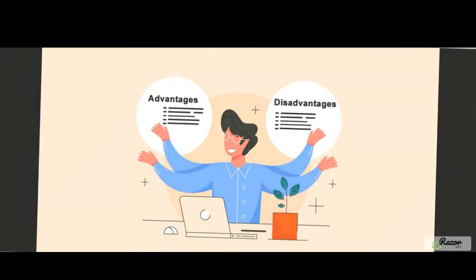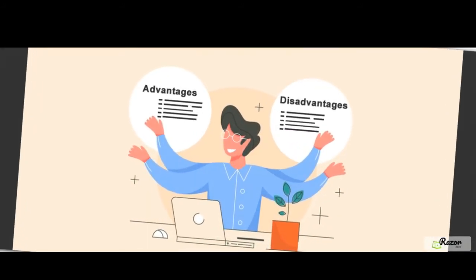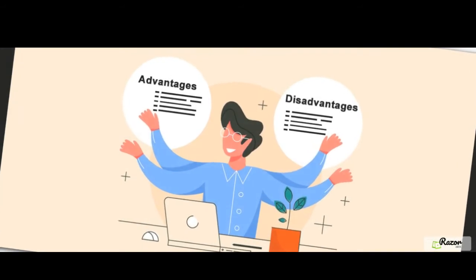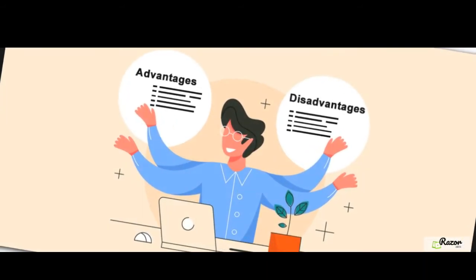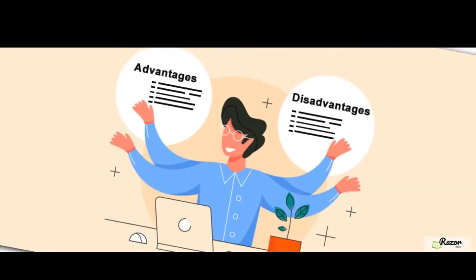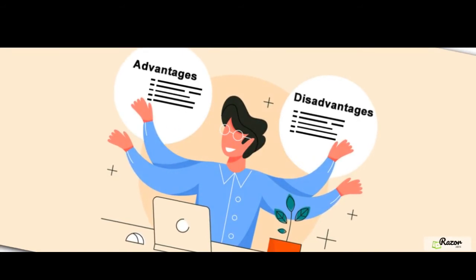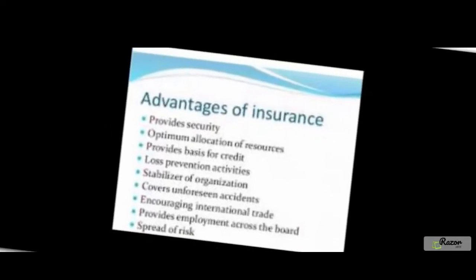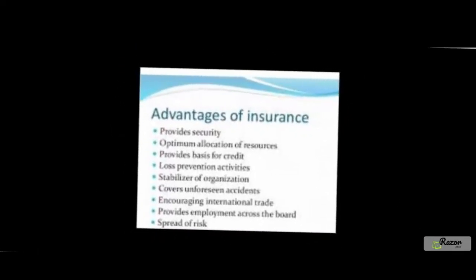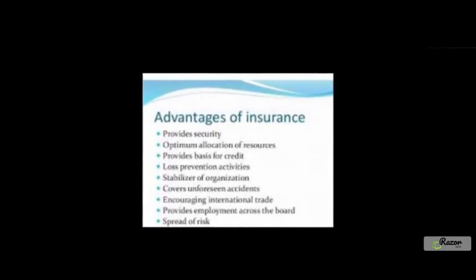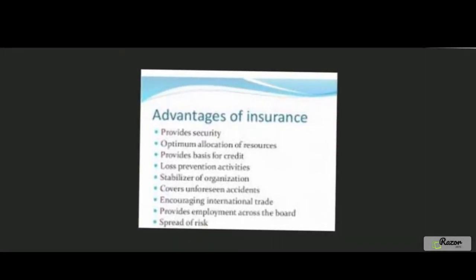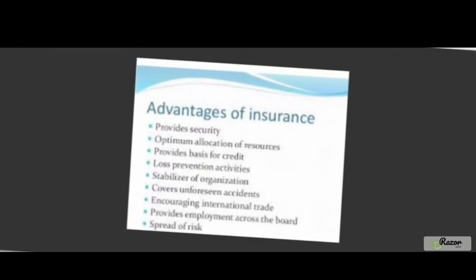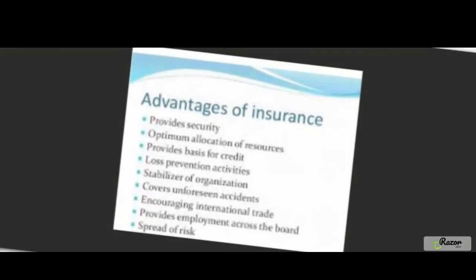Owing to the risks posed by natural calamities, diseases, medical emergencies, and accidents, general insurance coverage is something that can provide a blanket of financial protection. Accidents and misfortunes cannot be predicted, but it is in our hands to make sure that we are prepared. General insurance is the insurance of assets, financial assets included. If due to a contingency covered under the plan there is an economic loss, that loss is compensated by the general insurance policy.